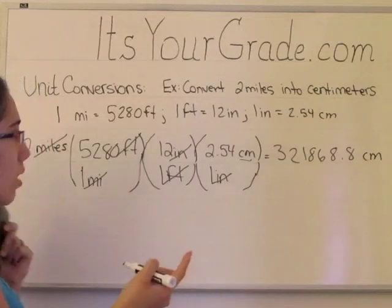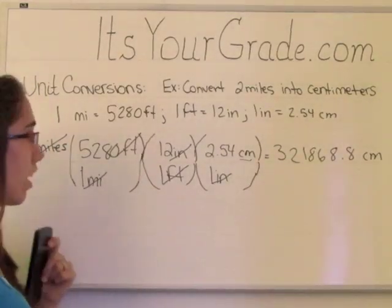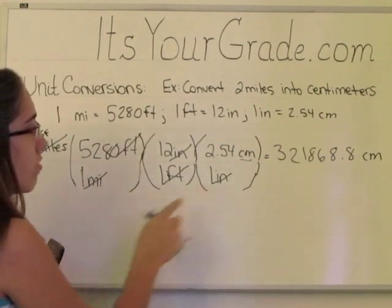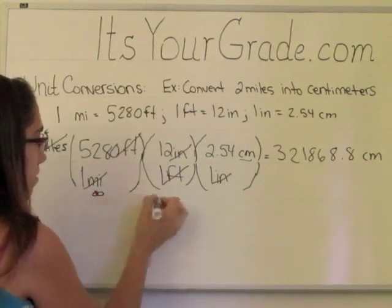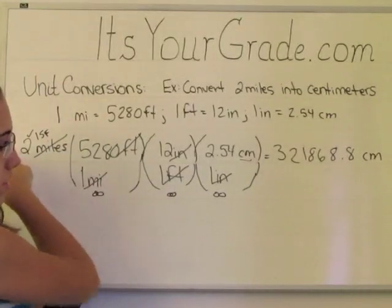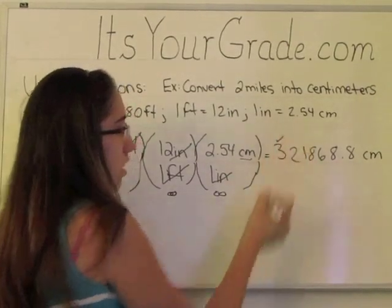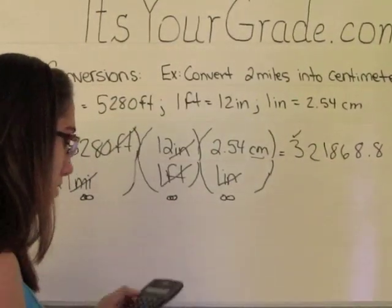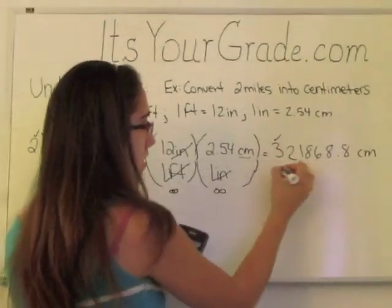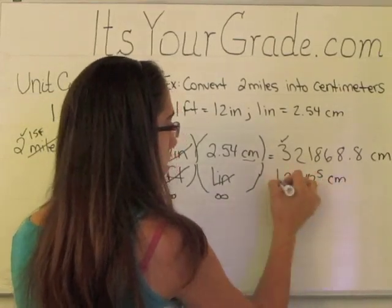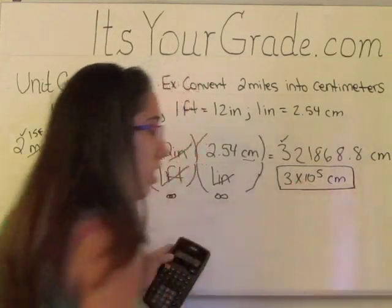Now, we have a problem here because we need to take significant figures into account. Significant figures I've talked about in a previous video. Here, this has just one significant figure. These conversion factors are exact values, so they have infinite number of significant figures. So we have one significant figure as the least. Well, this is a problem because this is a really large number. So we need to convert it to scientific notation. And if you convert this to scientific notation, you get 3 times 10 to the 5 centimeters. And this is now your answer.